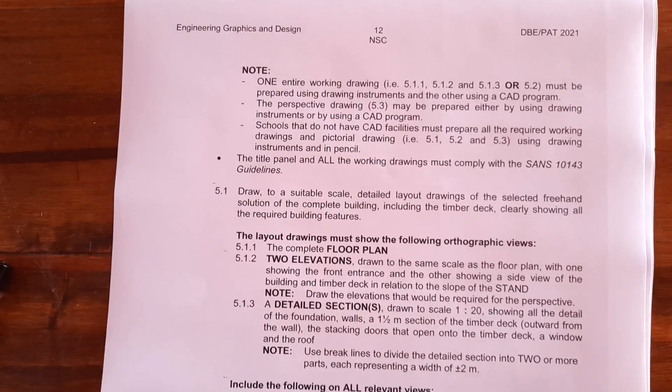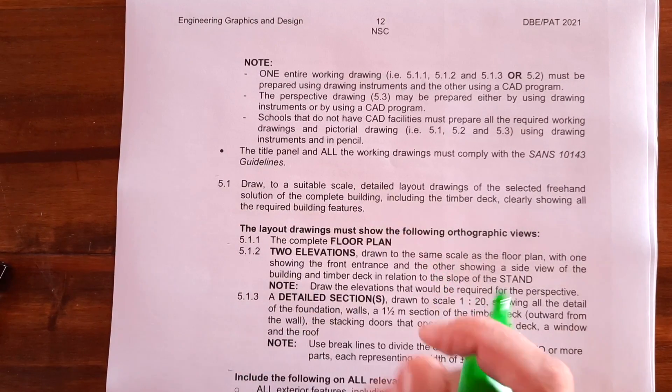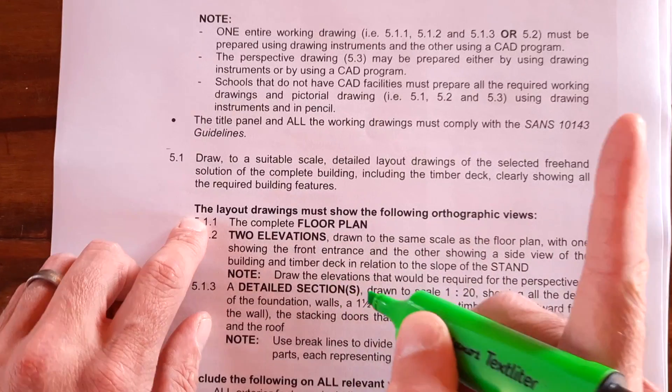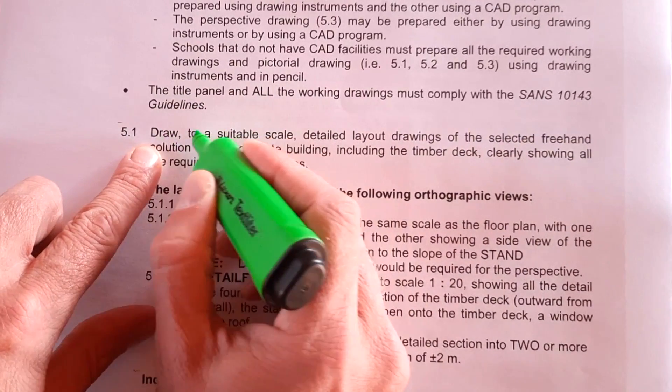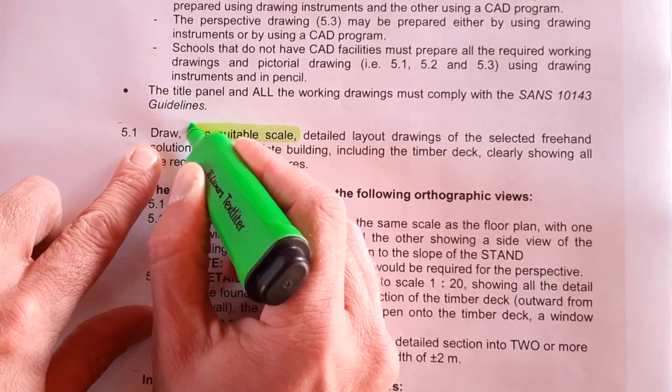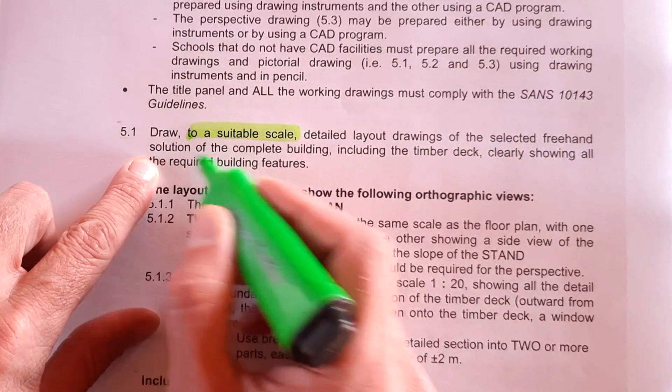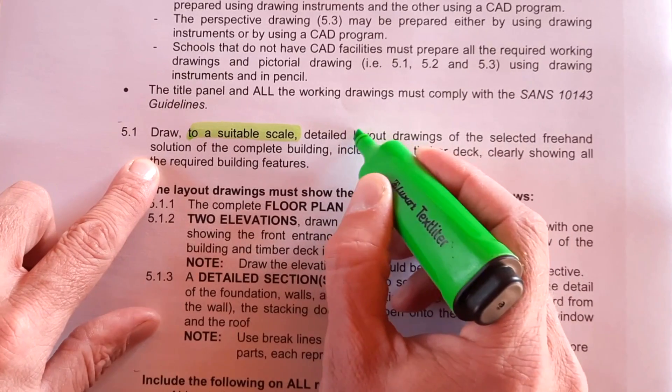Let's look at page 12 then and we're going to zoom in here on what is required. First things first, draw to a suitable scale, a detailed layout drawing of the selected freehand solution. That is, ladies and gentlemen, a floor plan.